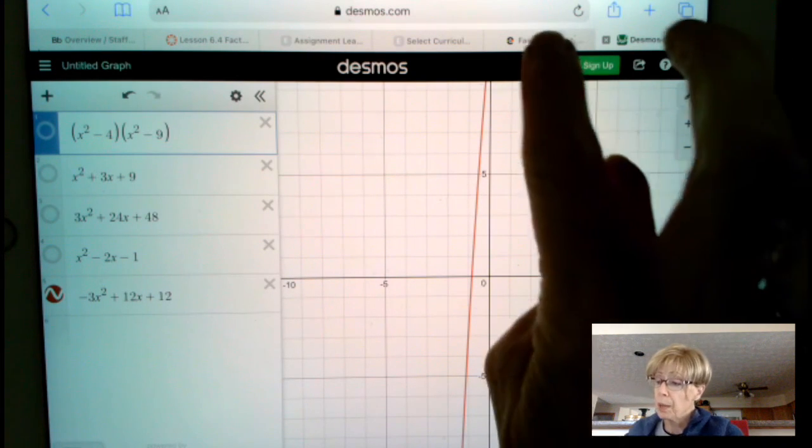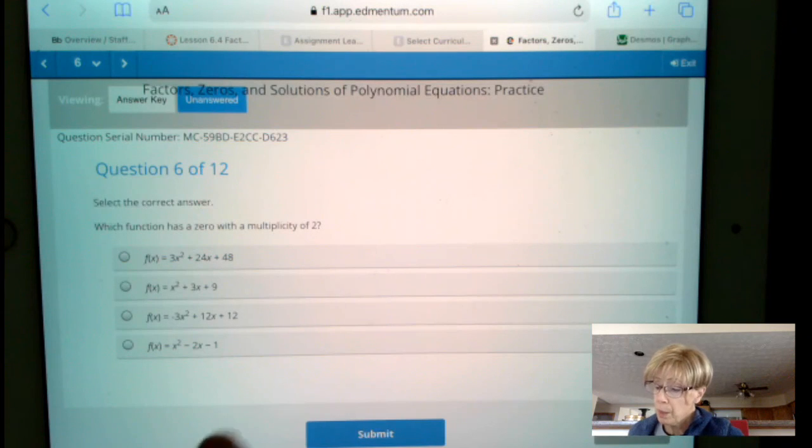But again, what I want to point out on this one is that a multiplicity of 2 means that we touch the x-axis, and where we touch the x-axis.